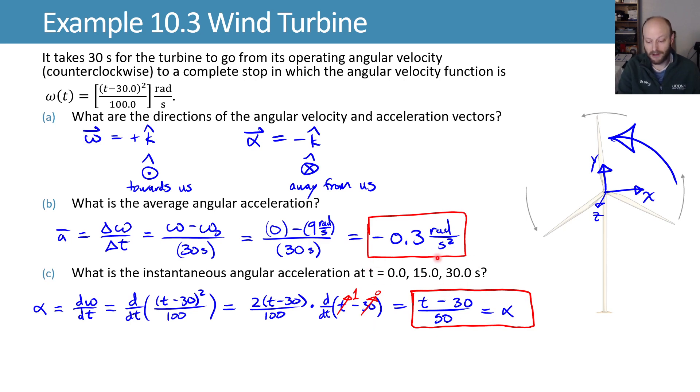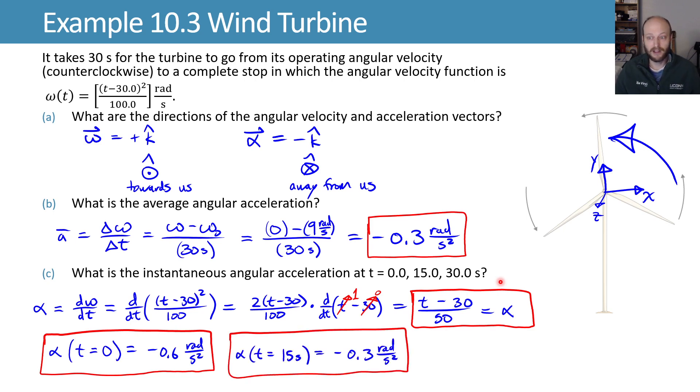That's not the final answer because we want it evaluated at different times, but we can plug in those times and get our three answers. At t=0: -0.6 rad/s². At t=15s: -0.3 rad/s². At t=30s: 0.